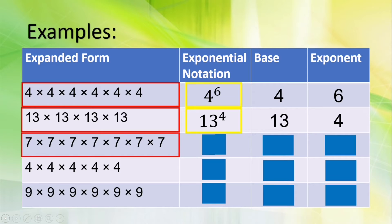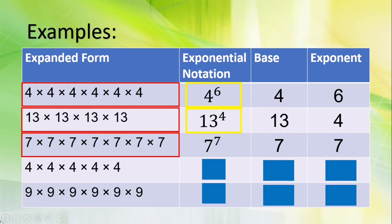Let's move to this expanded form. What number is multiplied by itself several times? Correct, it's seven, so seven is our base. Let's count how many sevens: one, two, three, four, five, six, seven. Meaning, our exponent is also seven. How are we going to read this one? It's seven raised to the seventh power.